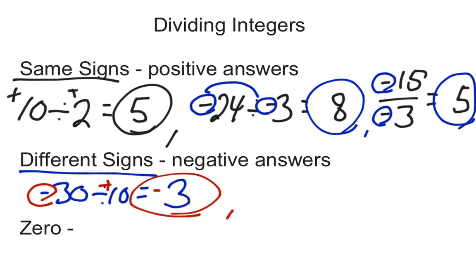And it doesn't matter if the negative is on the first number, like the 30 there for that one, or if it's on the second number. If I do positive 18 divided by negative 6, it still just means that the signs are different. 18 divided by 6 is 3. 18 is positive, the 6 is negative, so the signs are different. It's going to give me a negative answer. So again, I get negative 3.